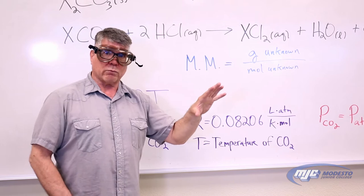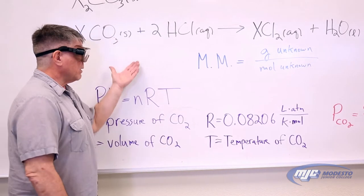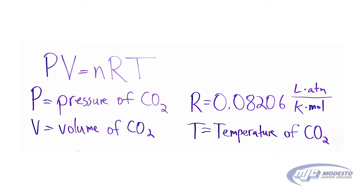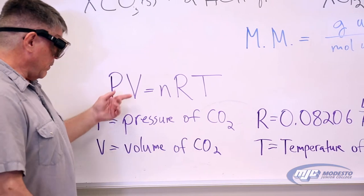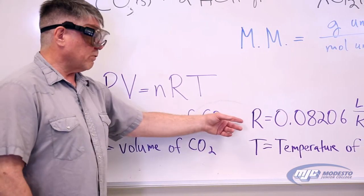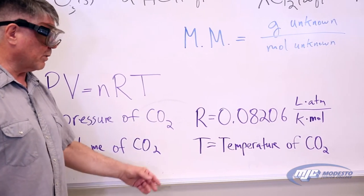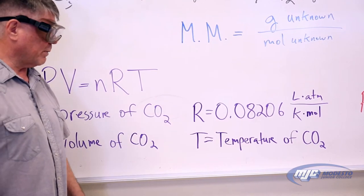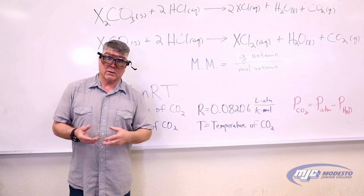I'm going to show you the apparatus in just a minute. If you look at the ideal gas law, this is going to apply to the carbon dioxide gas that's given off. PV = nRT, where P is the pressure of the carbon dioxide gas, V is the volume of the carbon dioxide gas given off, R is the gas constant — 0.08206 liters atmospheres per Kelvin mole — and T is the temperature of the carbon dioxide gas in Kelvin. There's one little twist we have to take into account.